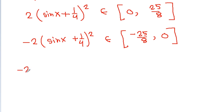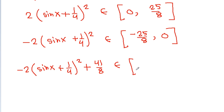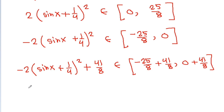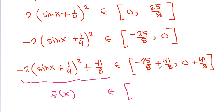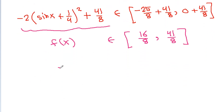Adding 41/8, we get f(x) = -2(sinx + 1/4)² + 41/8 ∈ [-25/8 + 41/8, 41/8] = [16/8, 41/8] = [2, 41/8]. So the range of f(x) is [2, 41/8].